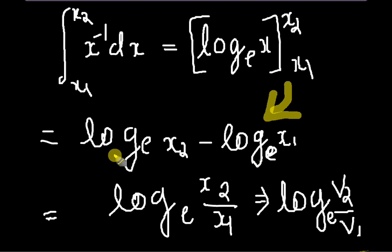We can write log to the base E of X2 by X1 equal to log to the base E of X2 minus X1. That's a simple logarithm identity.